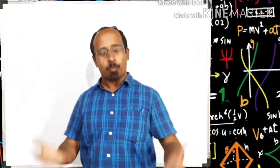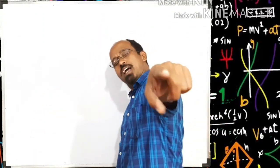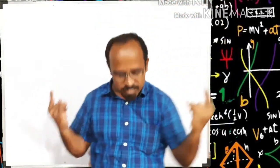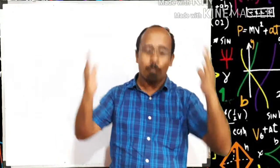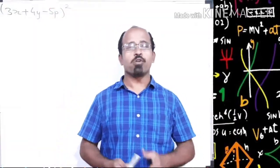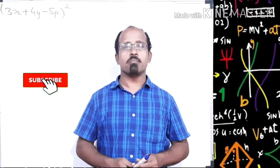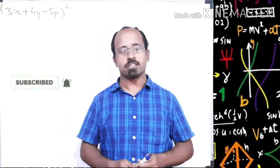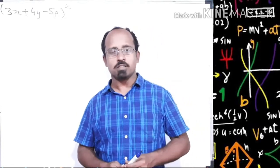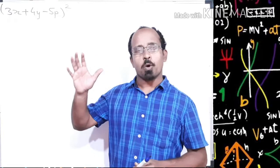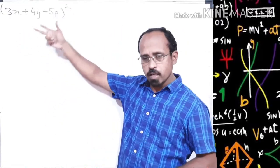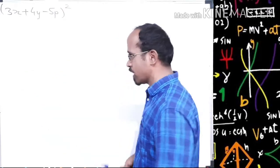Hello my dear friends, welcome to the quickest, the sharpest, the easiest simple subject — welcome to mathematics. In this video we are going to solve question number one, sub-question three of Practice 5.4 of standard eight, parsed straight board. The name of the lesson is Expressions and Formulas. The question is: (3x + 4y − 5p)².